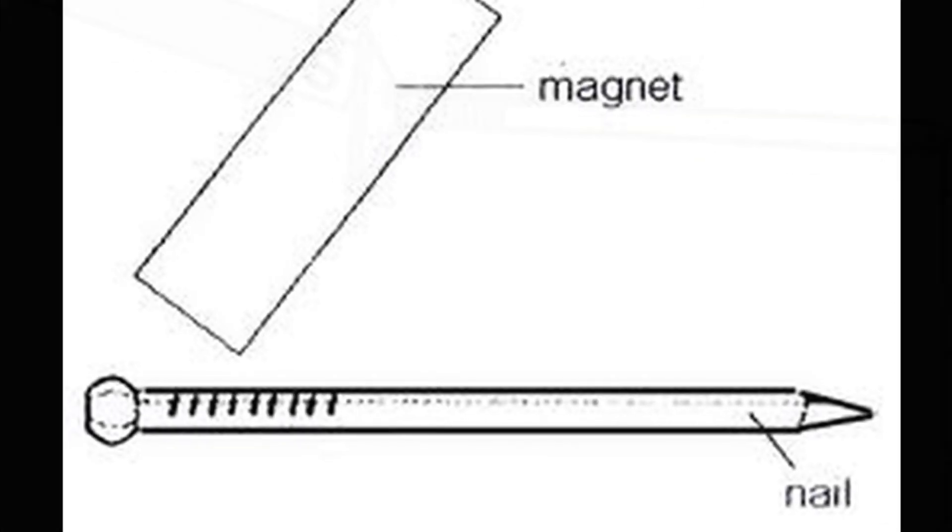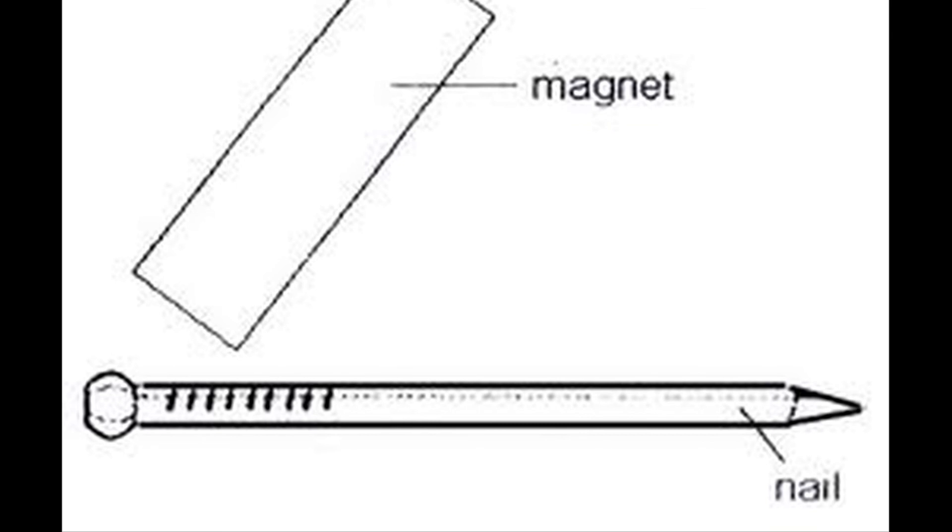However, the nail will keep its magnetism only so long as it is near a permanent magnet. If the permanent magnet is removed, the nail loses its magnetic properties. Such materials are called magnetically soft because they can be magnetized by weak fields.